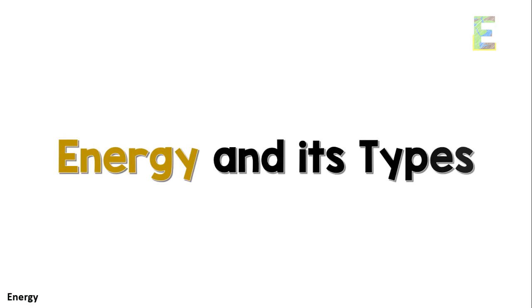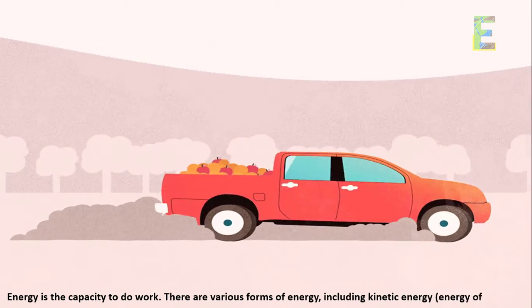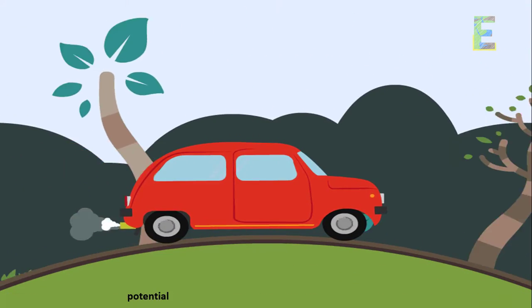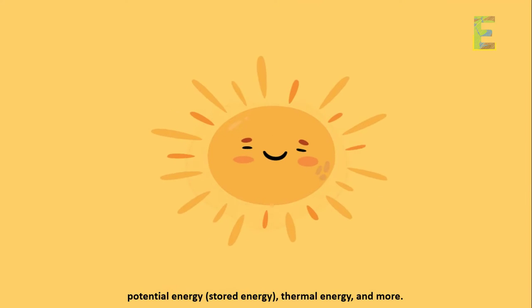Energy and its types. Energy is the capacity to do work. There are various forms of energy, including kinetic energy (energy of motion), potential energy (stored energy), thermal energy, and more.